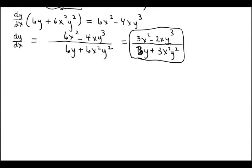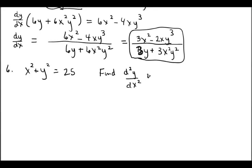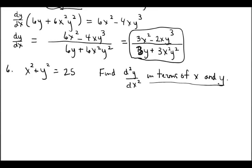Let's take a look at a problem where we do something a little different. Consider a circle centered at the origin with radius 5. The equation for that circle would look something like this. We're going to be asked to find the second derivative in terms of x and y. Based on what we saw earlier, this notation represents the second derivative, so not only am I going to find the first derivative — after I get that, I have to find the second derivative — and I want to put my answer in terms of x and y.